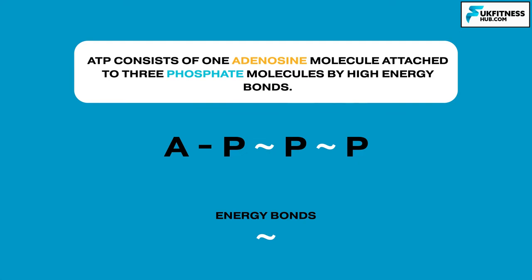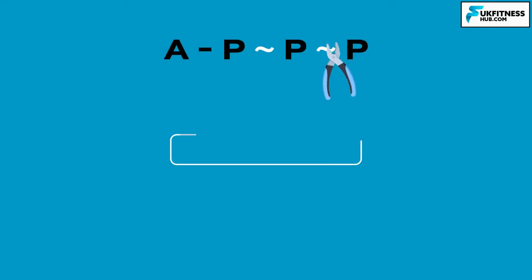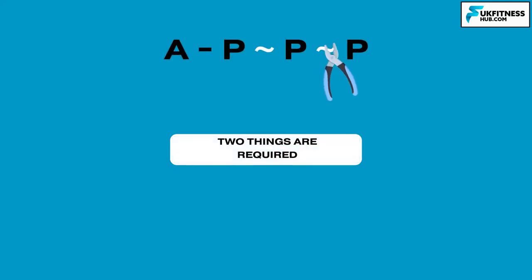To release energy from ATP, it is necessary to break one of the bonds. It is the third bond which is broken to release energy, and to enable the chemical reaction to occur, two things are required. Firstly, an enzyme is needed to act as a catalyst and speed up the reaction. This enzyme is called ATPase.